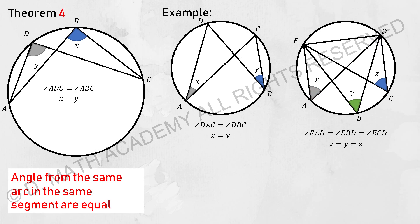For theorem number four, the full term of this is angle from the same arc in the same segment are equal. For example, ADC equals to ABC. It is somewhat similar to the first theorem we have learned earlier.